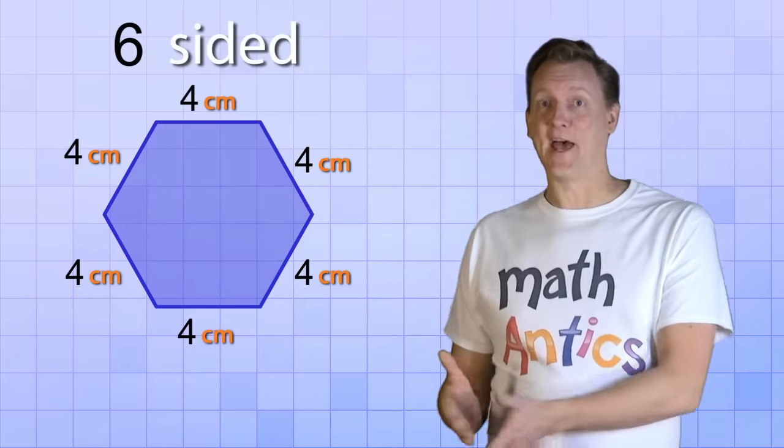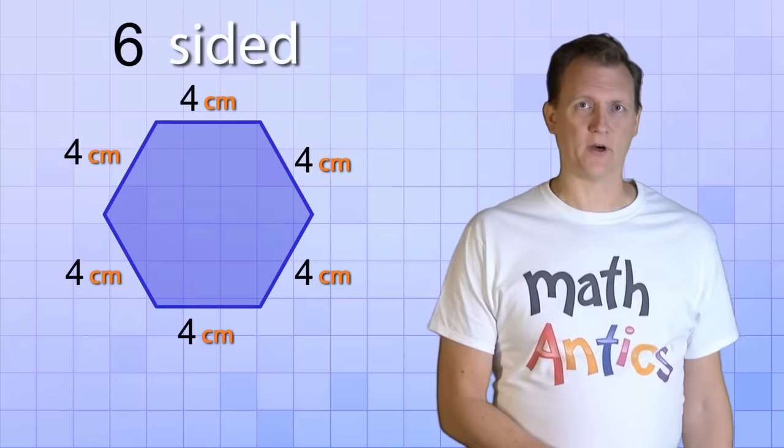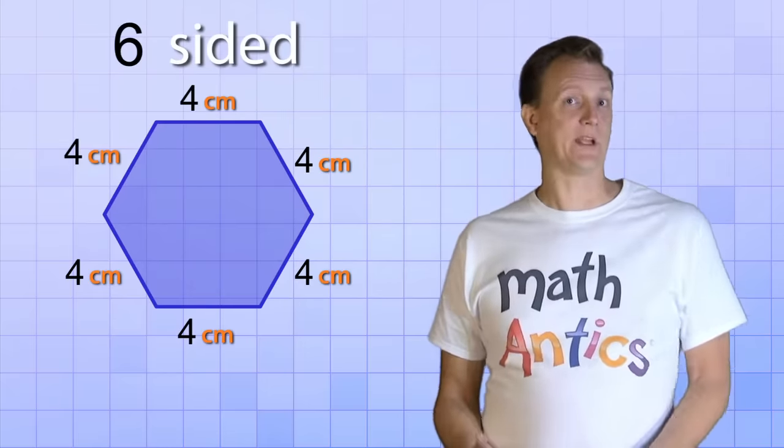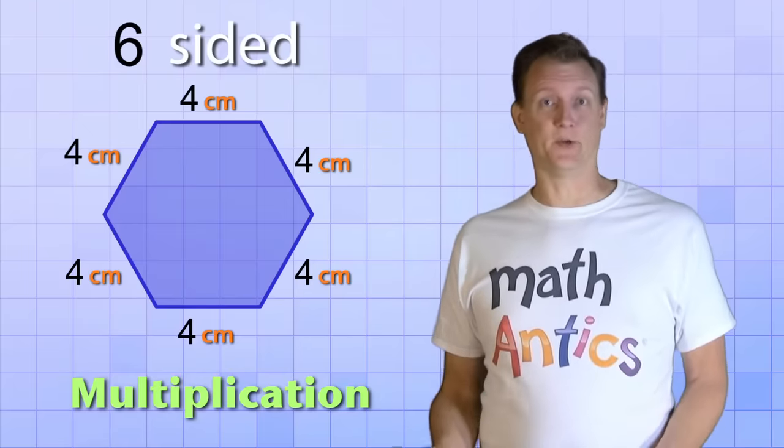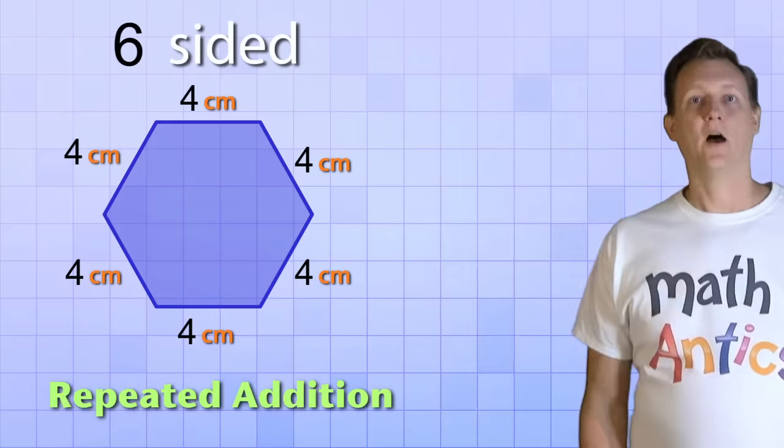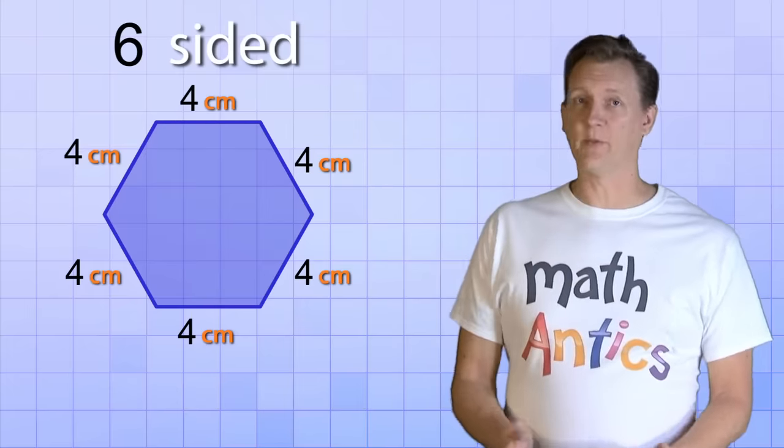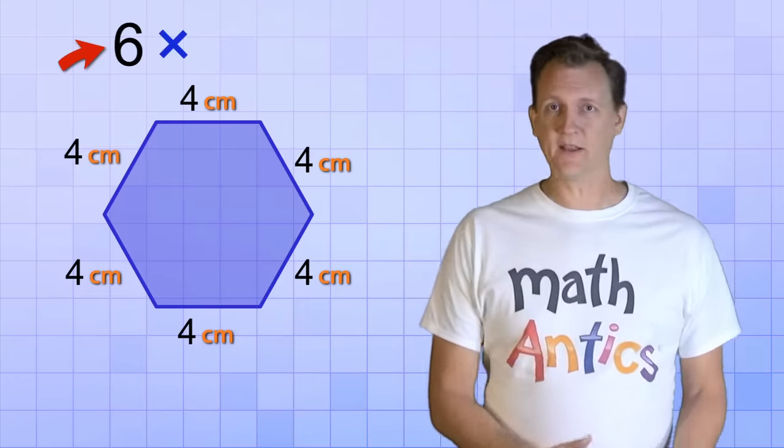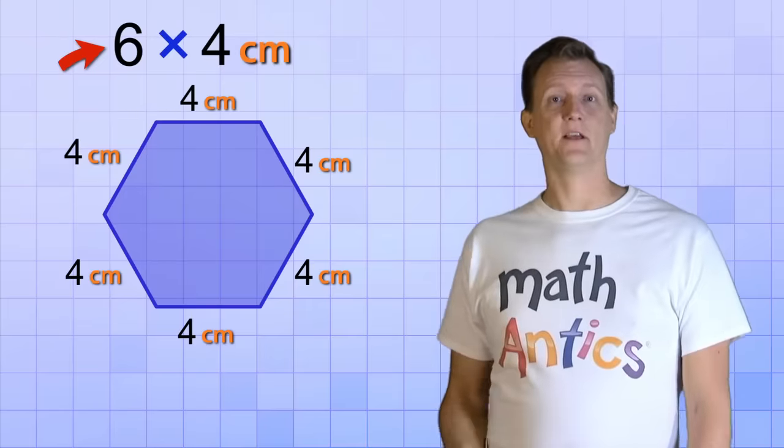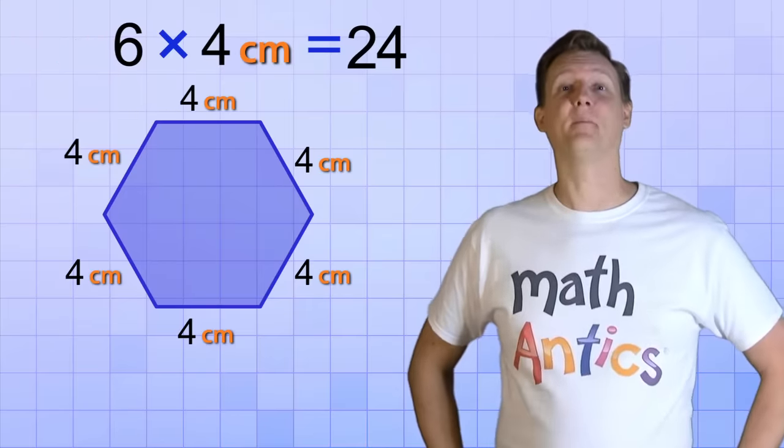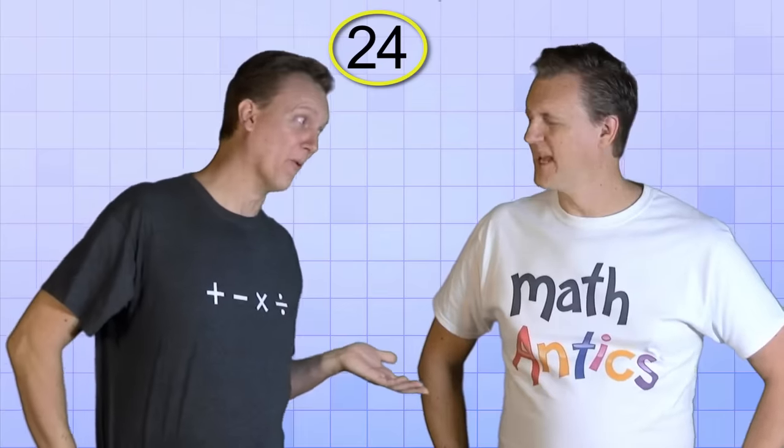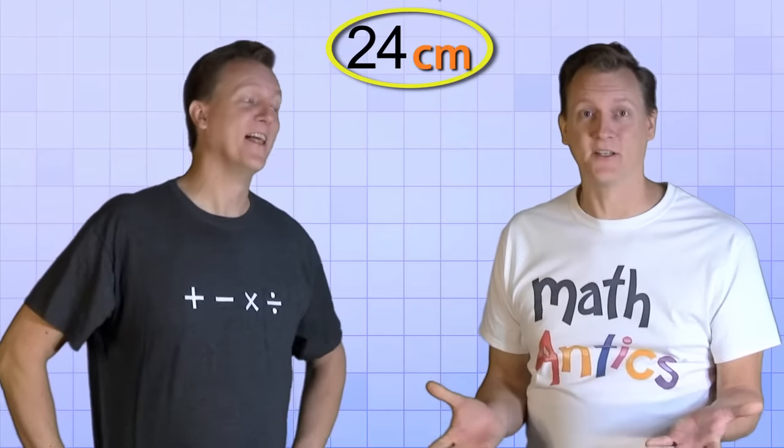Now, we could just add up all the sides like we did before, but since they're all the same, we can use multiplication as a shortcut. That's because multiplication is really just repeated addition. All we have to do is multiply the number of sides by the length of the sides. 6 times 4 equals 24. So that means the total perimeter must be 24. 24 what? Oh, centimeters! That's better.